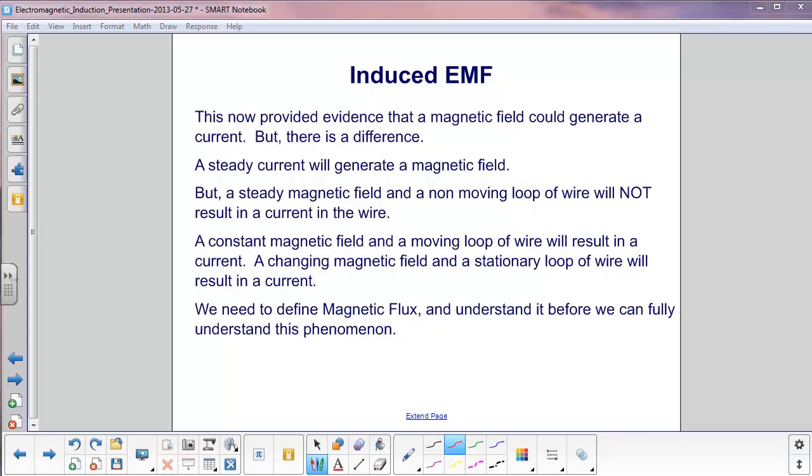Let's summarize what we've seen via experiments. We have evidence that a magnetic field can generate a current, but there is a difference between what a current does when it generates a magnetic field. A steady current will generate a magnetic field, but if you have a steady magnetic field and a non-moving loop of wire or a disk, like we showed in Faraday's disk generator, you will not get a current induced in the other wire.